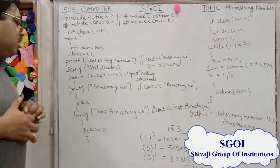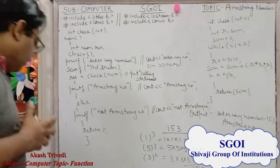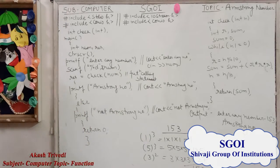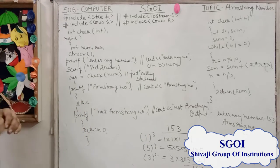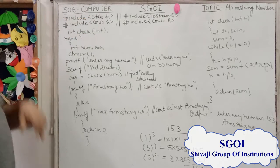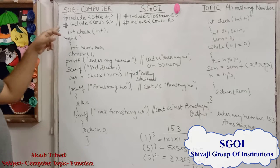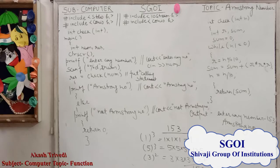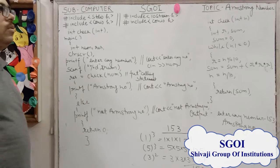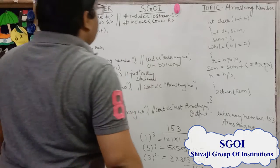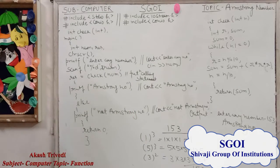To find an Armstrong number, we understand how we can make a program. We write our header files: for C, that is #include stdio.h and #include conio.h. For making this program in C++, we use another header file, that is #include iostream.h and #include conio.h.